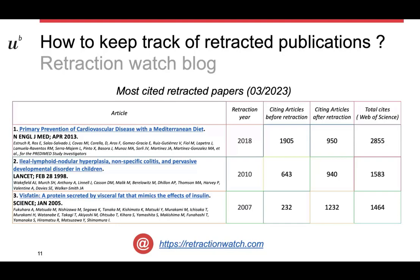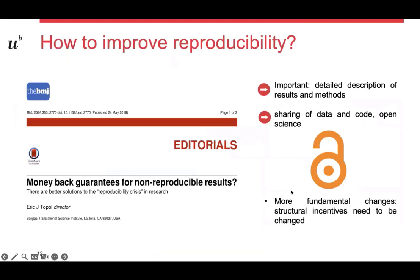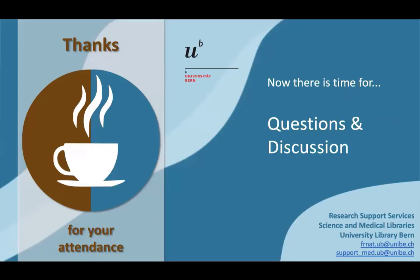It's clearly something to avoid. So what can we do in general to improve reproducibility? A provocative suggestion has been a money-back guarantee for non-reproducible results — maybe not the easiest to put in practice. However, what is important and where everyone can contribute is making the description of results and methods as detailed as possible, sharing code and data as much as possible, and adhering to the principle of open science. For a substantial change in the reproducibility problem, structural incentives would need to be changed. With this, I would like to thank you for your attention.